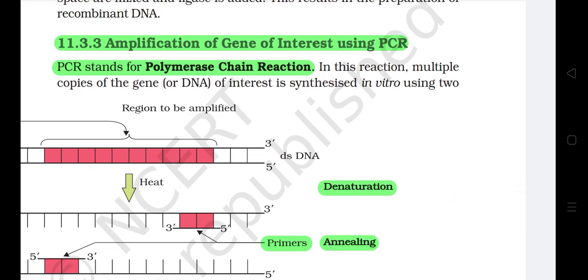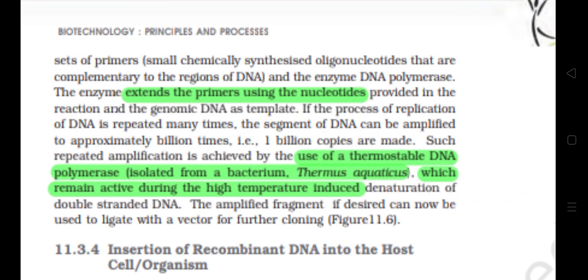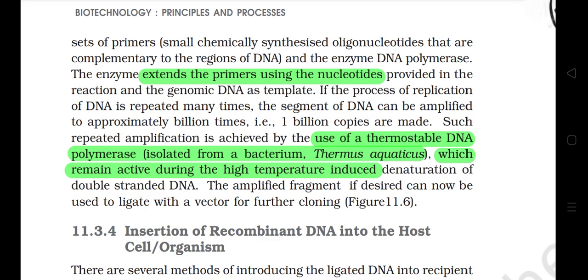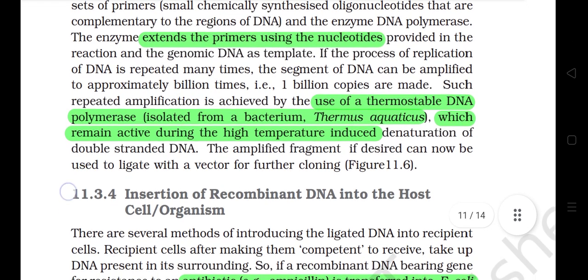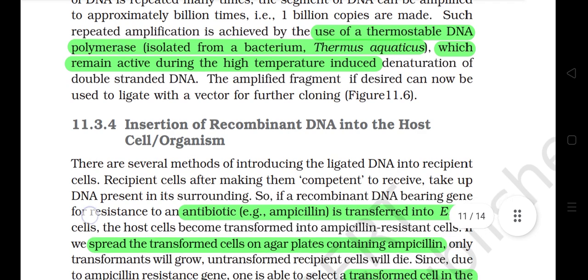11.3.3 Amplification of Gene of Interest Using PCR. PCR stands for Polymerase Chain Reaction. In this reaction, multiple copies of a gene or DNA of interest are synthesized in vitro using two sets of primers — small chemically synthesized oligonucleotides that are complementary to the regions of DNA — and the enzyme DNA polymerase. The enzyme extends the primers using the nucleotides provided in the reaction and the genomic DNA as template. If the process of replication of DNA is repeated many times, the segment of DNA can be amplified to approximately one billion copies. Such repeated amplification is achieved by the use of a thermostable DNA polymerase isolated from a bacterium Thermus aquaticus, which remains active during the high temperature-induced denaturation of double-stranded DNA. The amplified fragment, if desired, can then be used to ligate with a vector for further cloning.